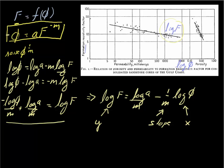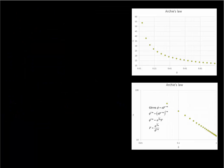That works out quite well — we have basically the relationship presented in Archie's paper. Now take a look at these plots: this is a plot of F as a function of the porosity, and you can see that it drops off exponentially. I've put the relationship down here.